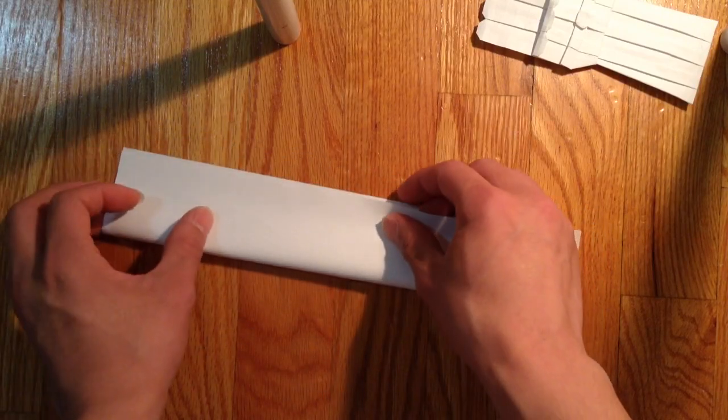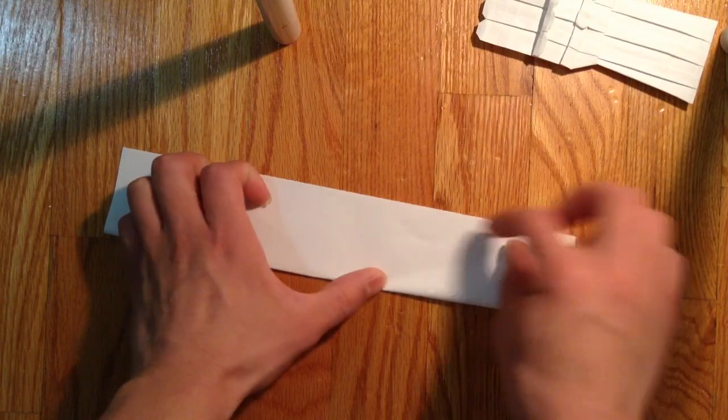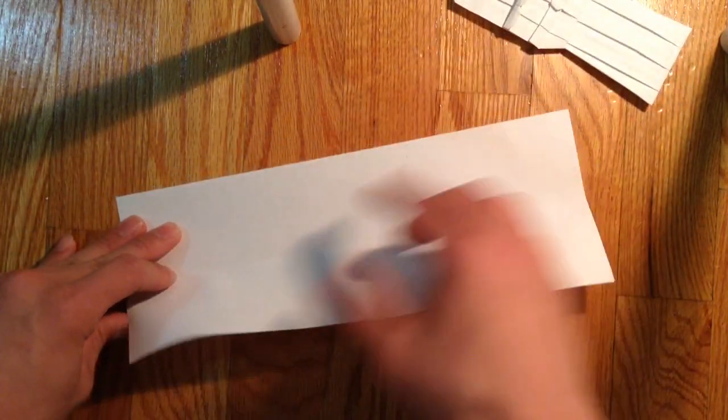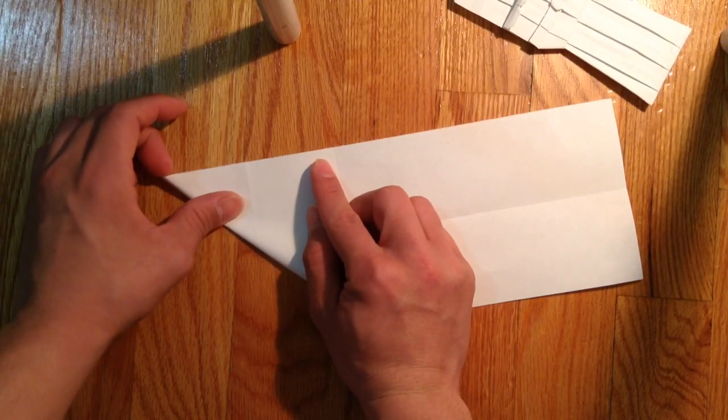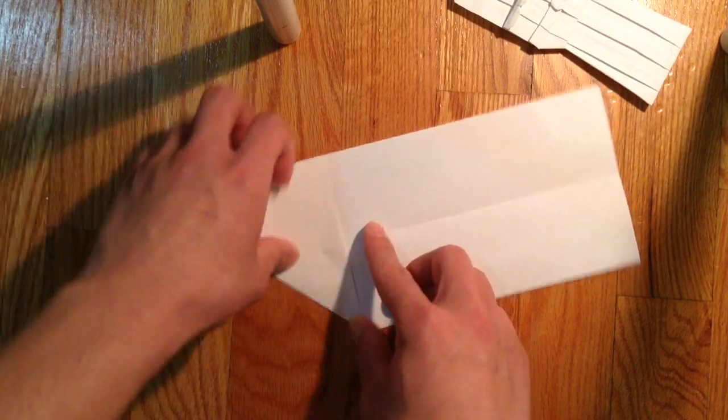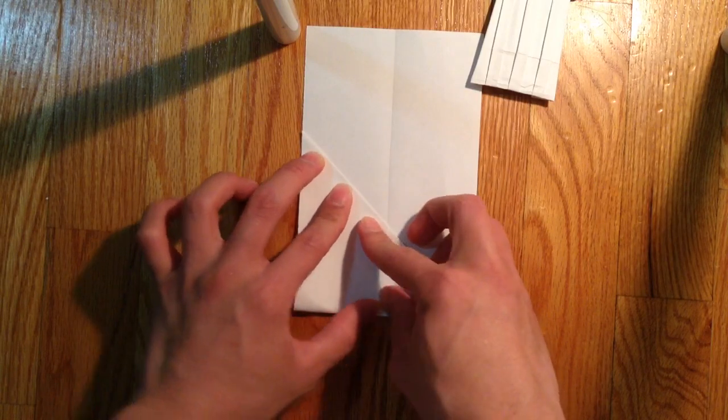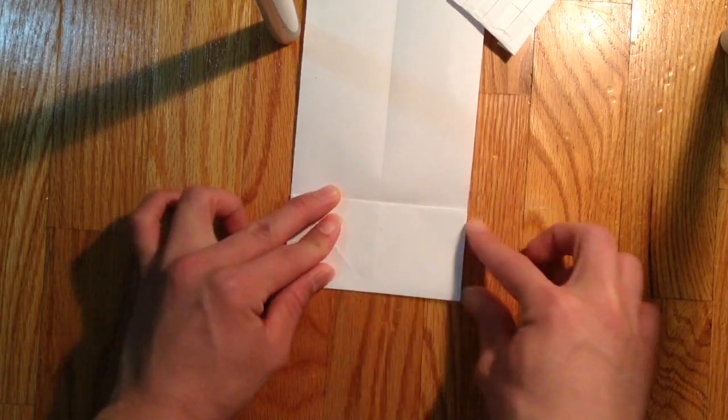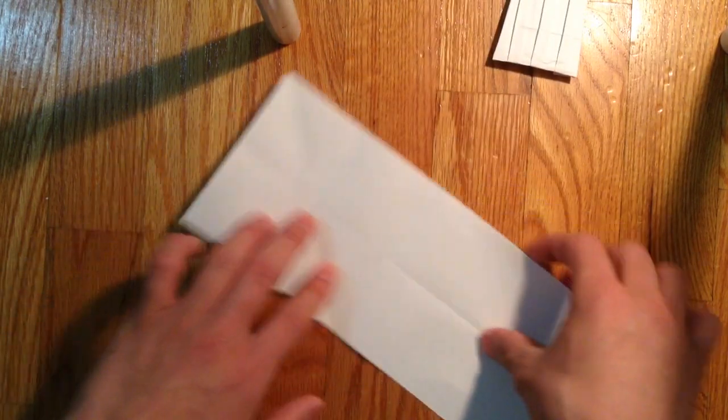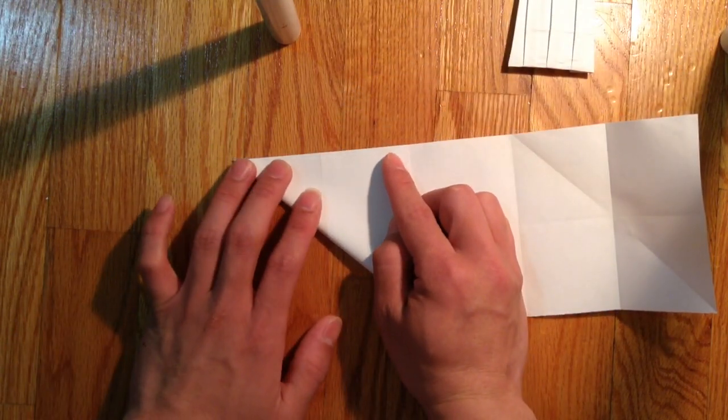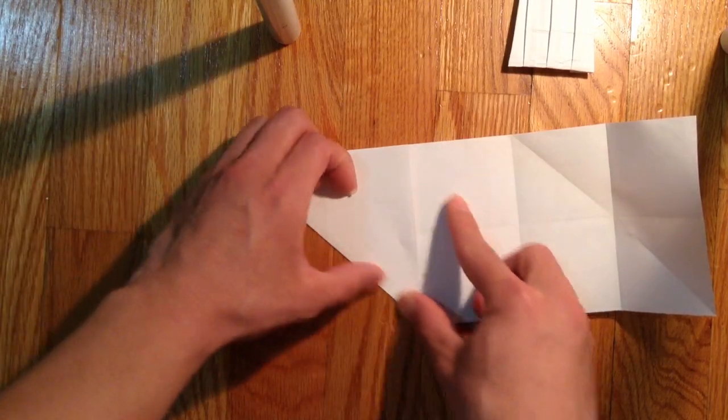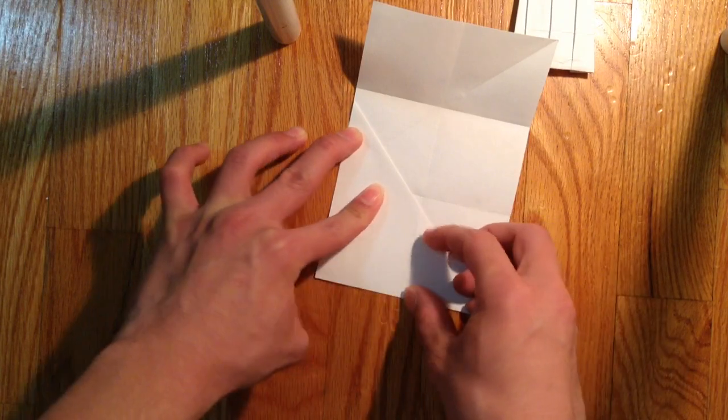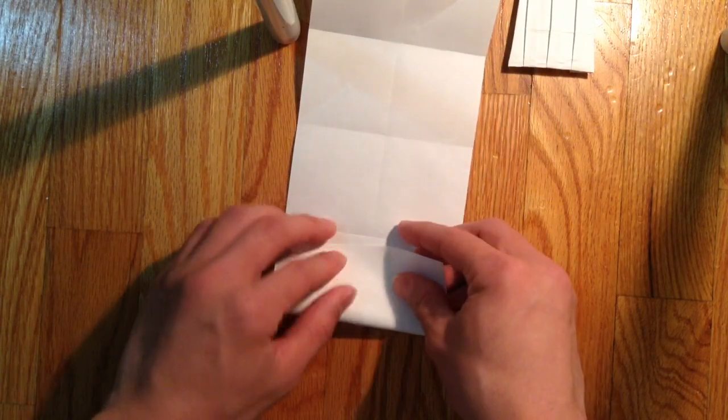So first you want to fold it in half like this. Okay, you want to make two squares on each end. Like so, and bring the end to that crease line right there. And do the same thing here. So make a square and fold that in half. And fold that square in half.